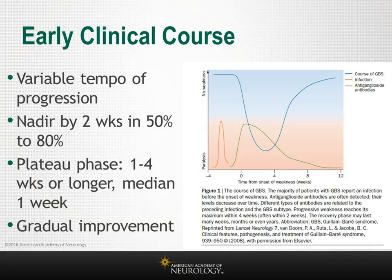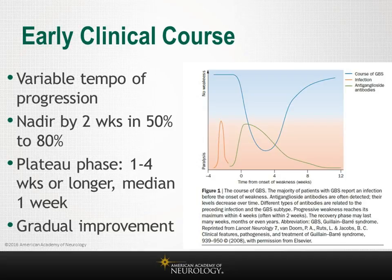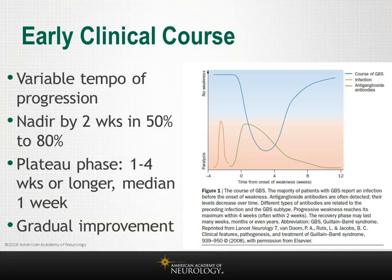Some patients progress rapidly to become ventilator dependent within hours or days, whereas others have mild progression for several weeks and never lose ambulation. Occasional patients may have a stuttering or stepwise progression. Weakness may range from mild to severe flaccid quadriplegia, and about a third never lose ambulation. The nadir is reached by two weeks in 50 to 80 percent of patients, followed by a plateau phase with a median duration of approximately one week in a large Brain 2014 study of over 500 patients. Following the plateau, patients gradually start to recover.